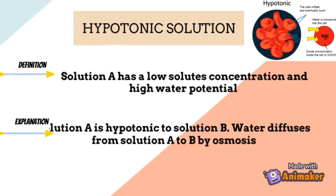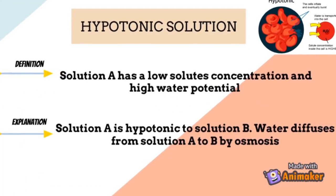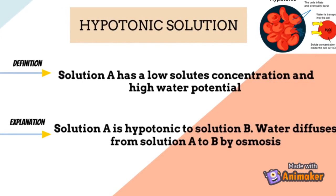A hypotonic solution is where solution A has a low solute concentration and high water potential compared to solution B. We describe this as solution A being hypotonic to solution B, and water diffuses from solution A to solution B by osmosis.